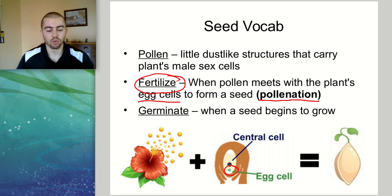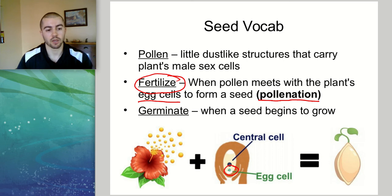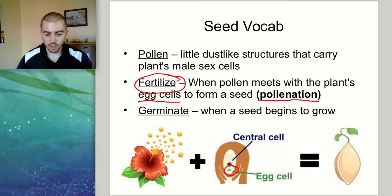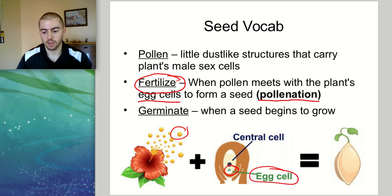The sperm cells fertilize the egg cell, and once the egg cell is fertilized, it can grow into a seed. So we need pollen plus egg cell to make a seed.